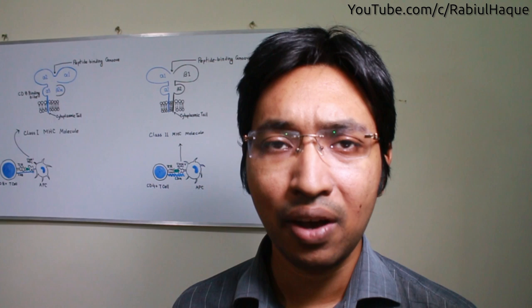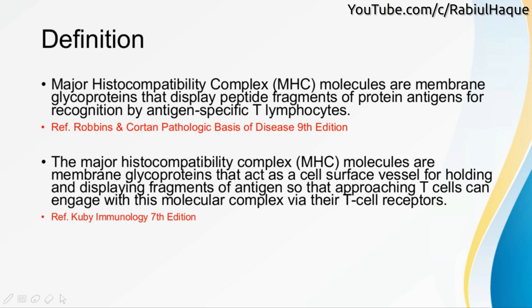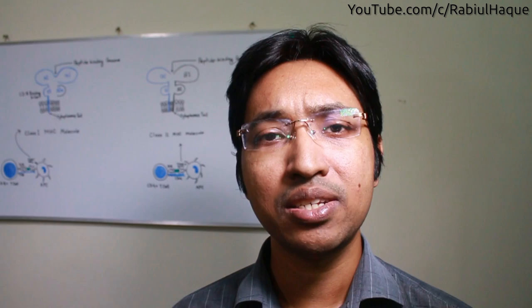Major histocompatibility complex molecules are membrane glycoproteins that display peptide fragments of protein antigens for recognition by antigen specific T lymphocytes. We can also define them as membrane glycoproteins that act as a cell surface vessel for holding and displaying fragments of antigen so that approaching T cells can engage this molecule complex via their T cell receptors.